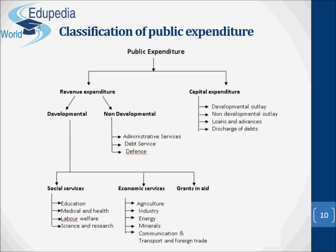Now let's talk about the classification of public expenditure. Public expenditure has been classified into revenue expenditure and capital expenditure. The revenue expenditure is current expenditure — for example, it includes administrative expenditure and maintenance expenditure. This expenditure is of a recurring type. Capital expenditure is of capital nature and is incurred once for all; it is non-recurring expenditure. For example, expenditure on building multipurpose projects, setting up big factories like steel plants, money spent on land, machinery and equipment.